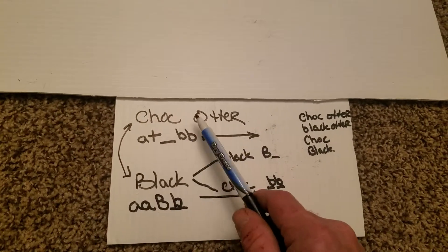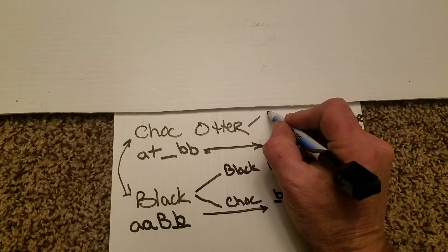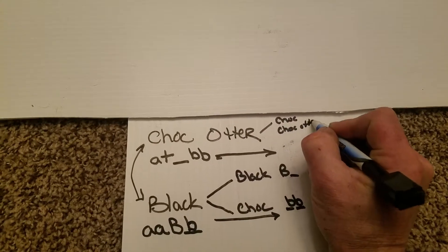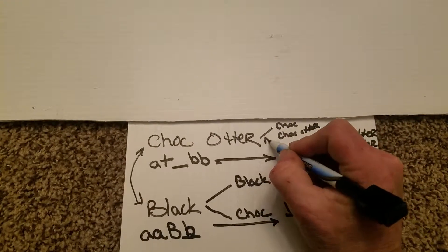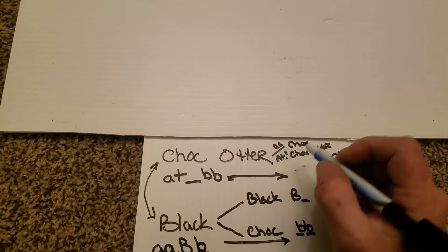We also know our chocolate otter came from a chocolate and a chocolate otter parent. This one being a t, we don't know, and we know this one being a a.